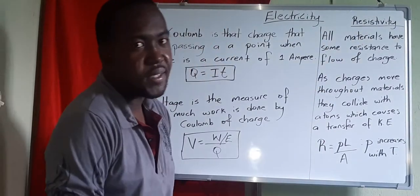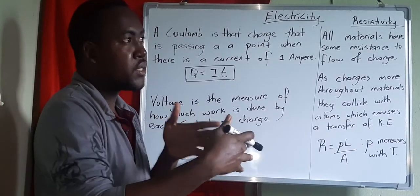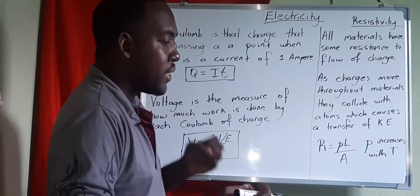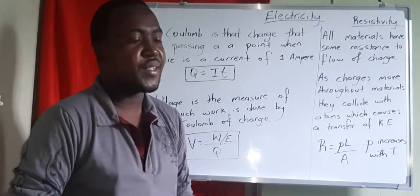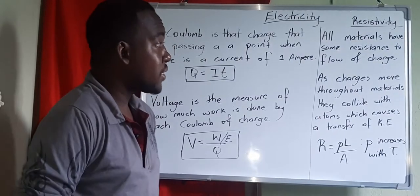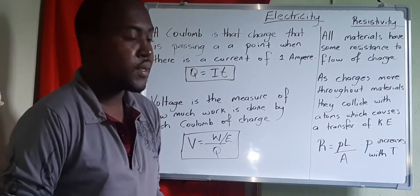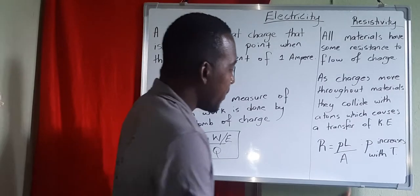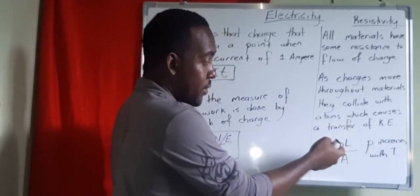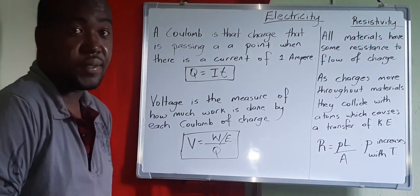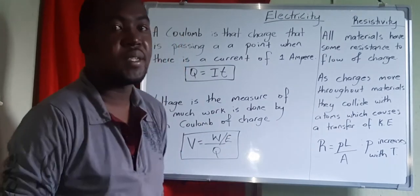The resistivity of a material tells us how much each individual material will cause electrons to slow down. All materials have resistance because they all have atoms — as charges move through the material they collide with those atoms, causing a transfer of kinetic energy and slowing them down. So R (resistance) depends on rho (resistivity of the material), L (length of the material), and A (cross-sectional area).